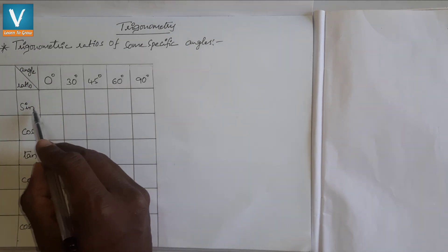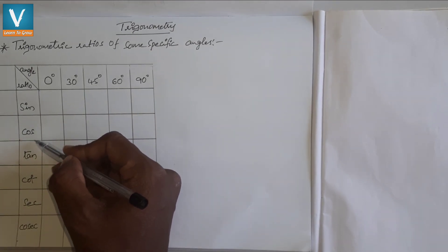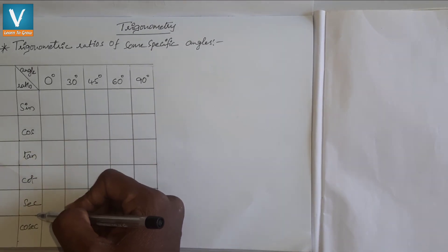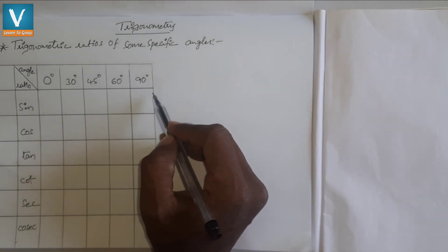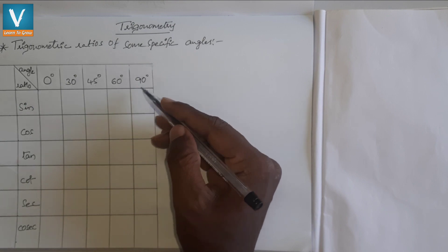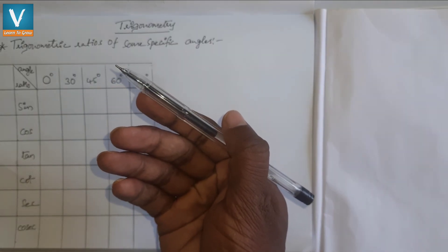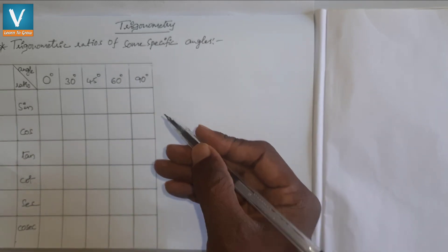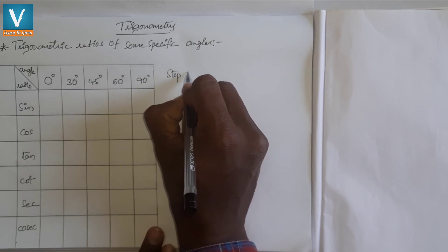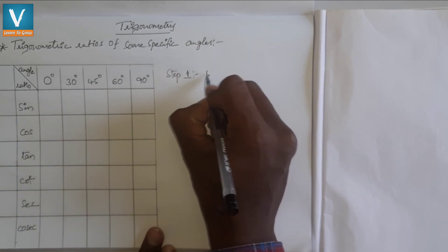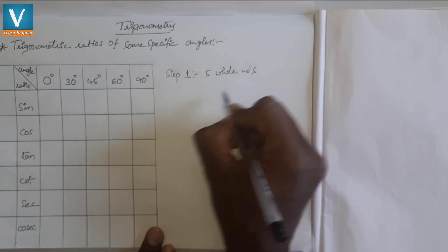If you know the values of sine from 0 degrees to 90 degrees, the rest of the five ratios we can find out very easily. First of all, we will see how to get the values of sine from 0 to 90 degrees. There are different methods like the fingers method or triangle method, but I am taking the whole numbers process. In step 1, I am taking the first five whole numbers.